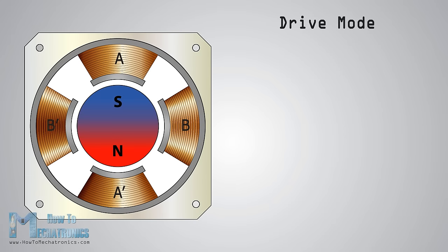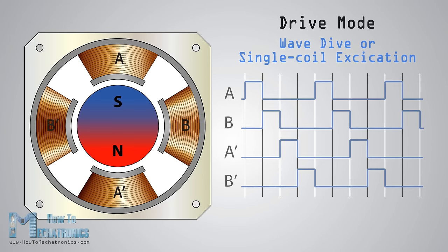There are several different ways of driving the stepper motor. The first is wave drive or single-coil excitation. In this mode, we activate just one coil at a time, which means that for this example motor with four coils, the rotor will make a full cycle in four steps.